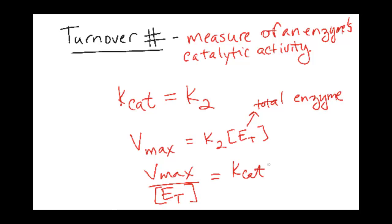There are some enzymes like catalase that literally will convert 40 million products per second. That's pretty impressive. And then some enzymes won't even complete a whole product per second, like lysozyme. Alright, so that's what a turnover number is.